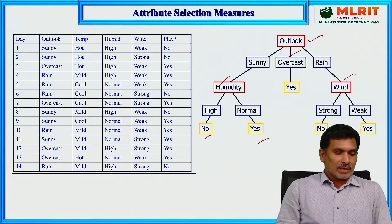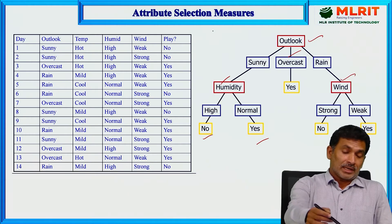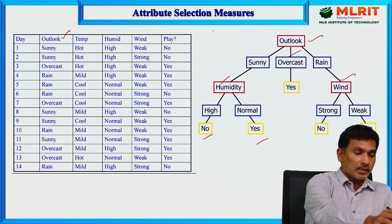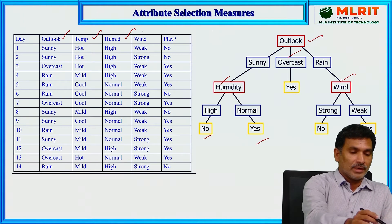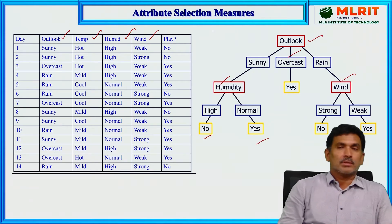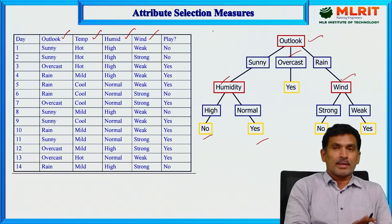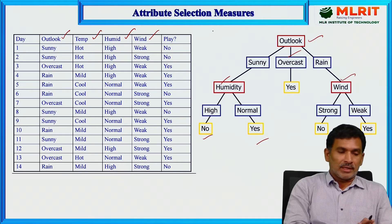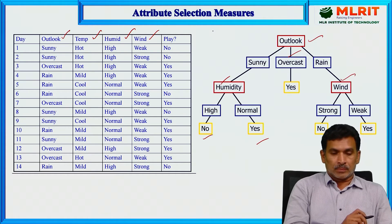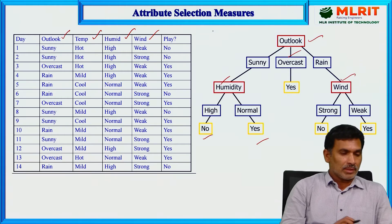Now everybody will get a question: this dataset has attributes like outlook, temperature, humidity, wind, and the target label. So why do we need to select outlook? Why cannot we select temperature, humidity, or wind? That is the basic question everybody will get.